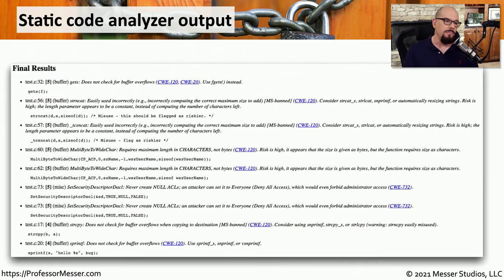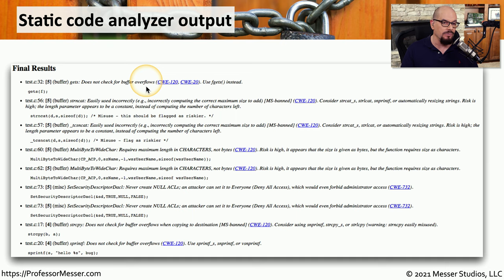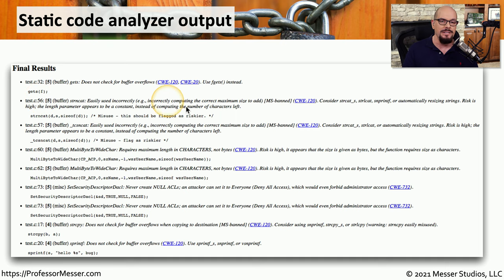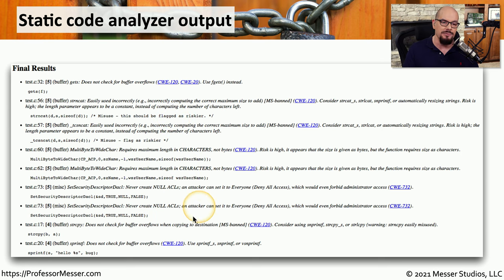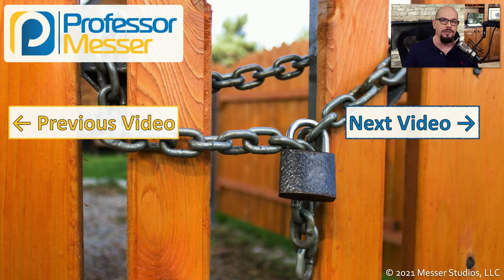Here's an example of some output from a static code analyzer. In the first set of source code, test.c on line 32, an error was found that says it does not check for buffer overflows, gives examples of what those might be, and says to use fgets instead. Another set of errors was found on test.c on line 56, with examples of things considered a problem and ways to fix it. Each one of these test results has to be examined to make sure it really does match a particular error or vulnerability, and these problems can then be resolved before the application is deployed.